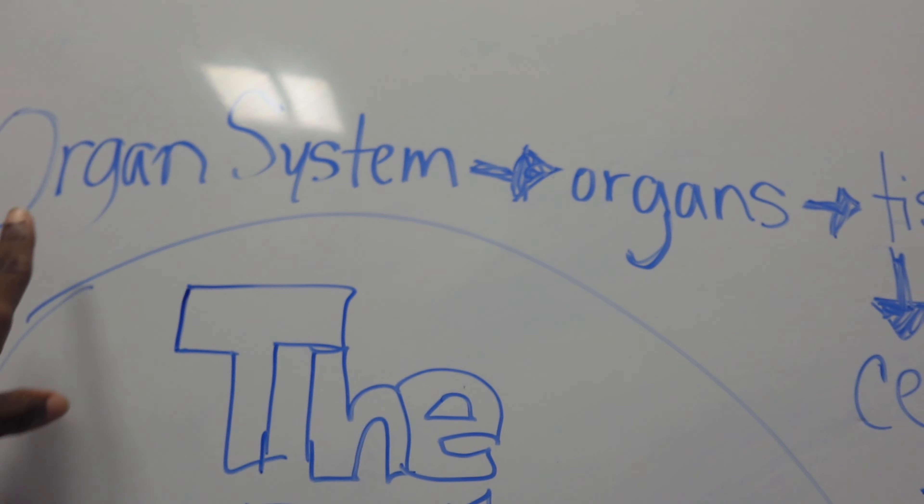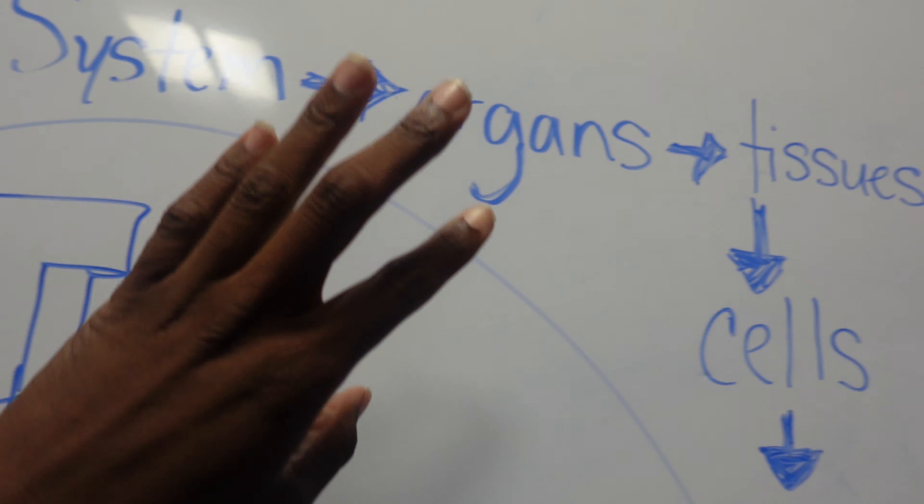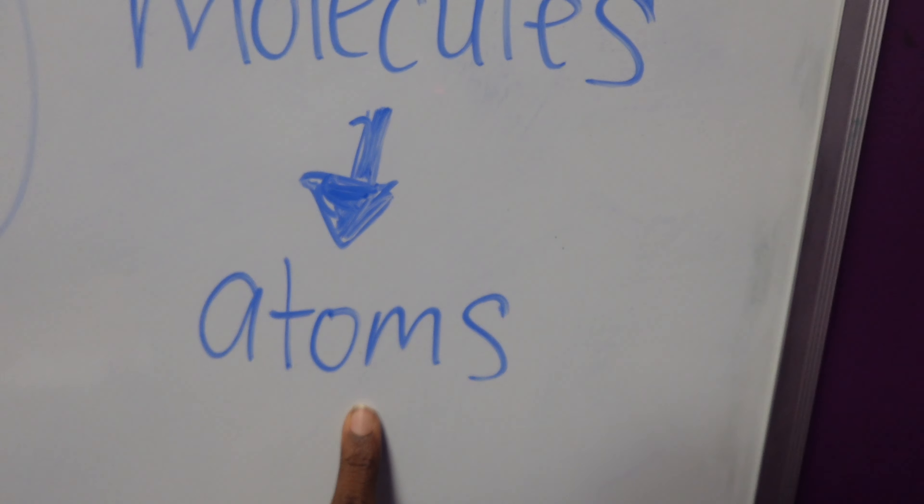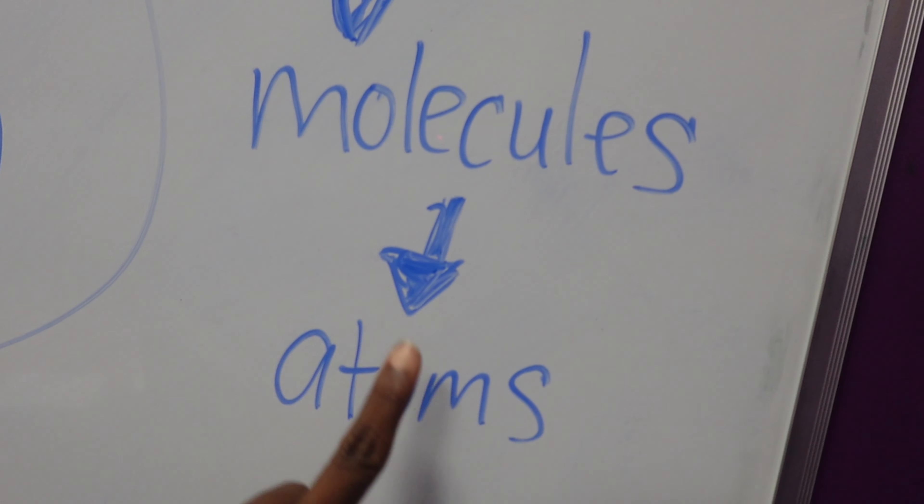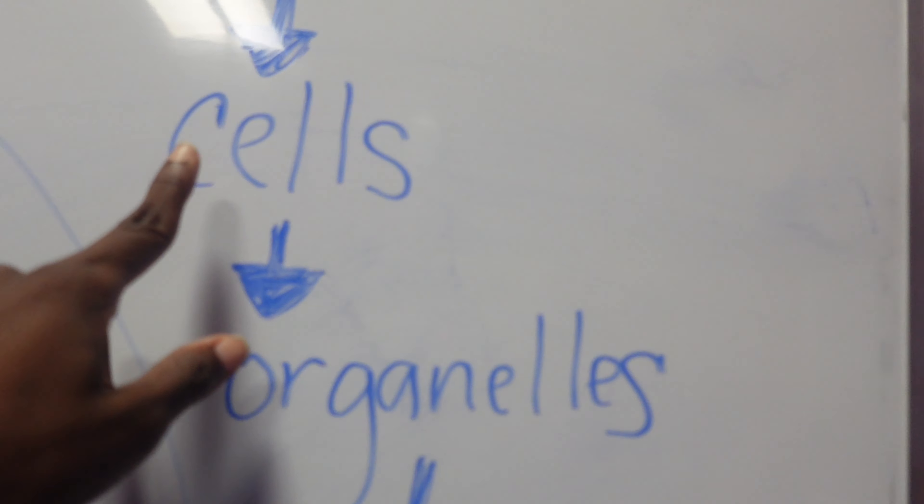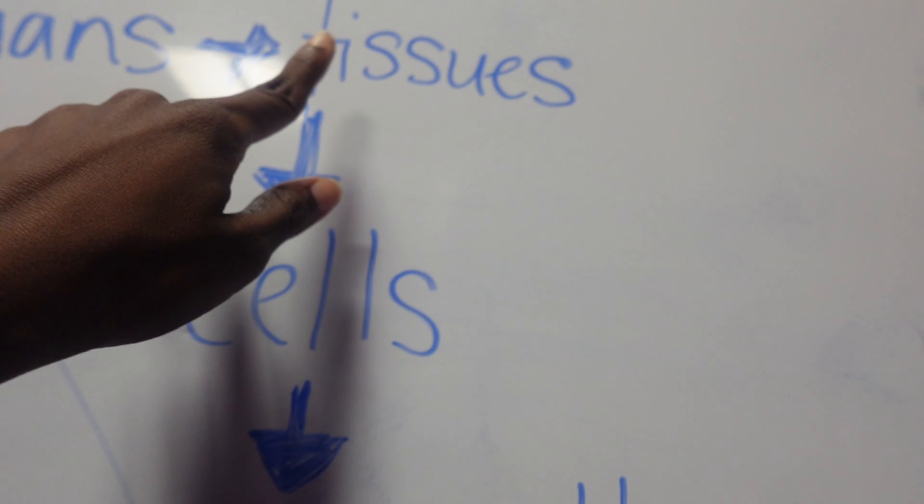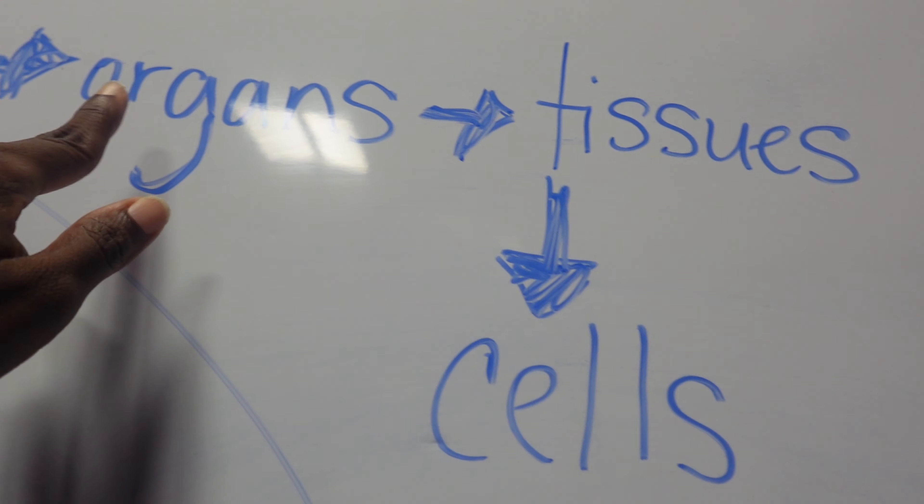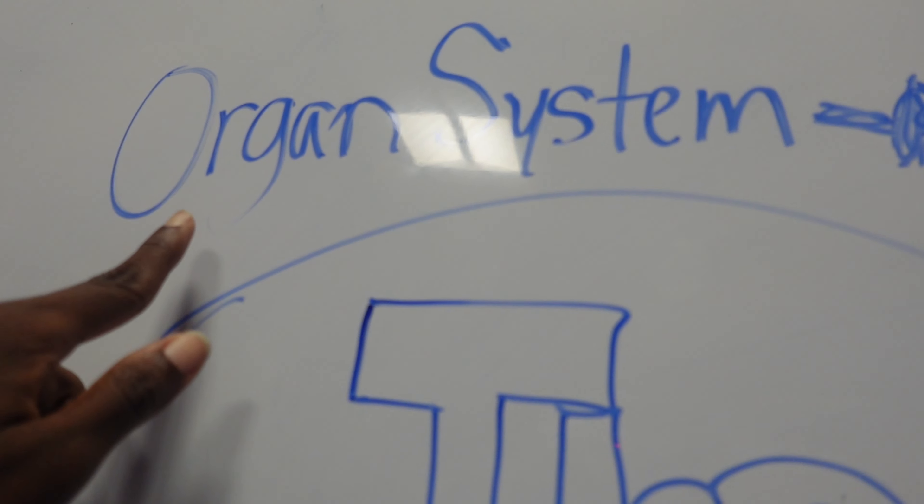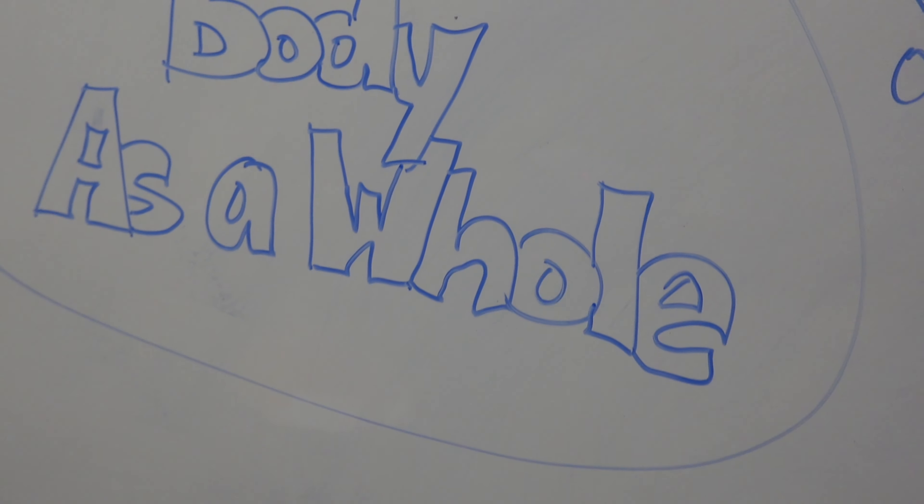Okay, so the body is made of organ systems but we're going to go down to the smallest unit. The smallest unit is atoms. Atoms make up molecules, molecules make up organelles, organelles make up cells, cells make up tissues, tissues make up organs, and then organs make up organ systems. And that is the body as a whole, which is chapter two.